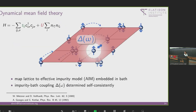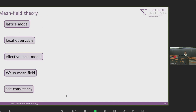In DMFT, we start from a lattice model — the Hubbard model — and map it to an effective impurity model: an atom embedded in a bath of noninteracting states. The coupling is described by a hybridization function with frequency dependence, capturing the time dynamics at a specific site. This impurity-bath coupling is determined self-consistently. This is analogous to classical mean field theory, where a lattice model is reduced to an effective local model interacting with a Weiss mean field, which must be solved self-consistently.